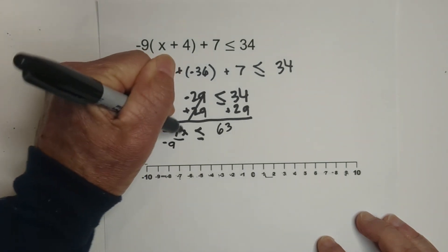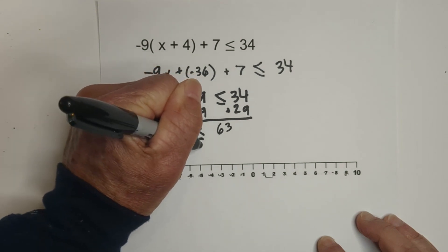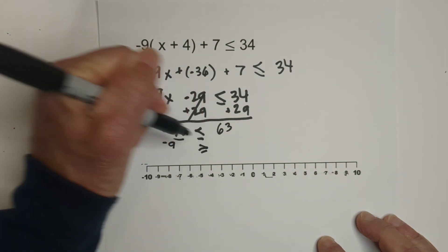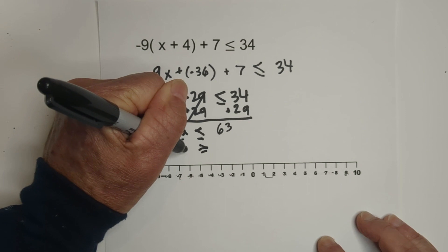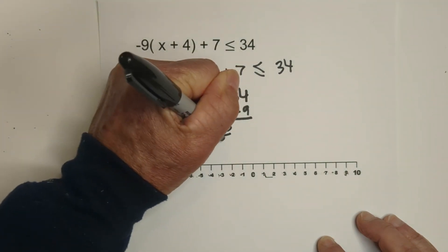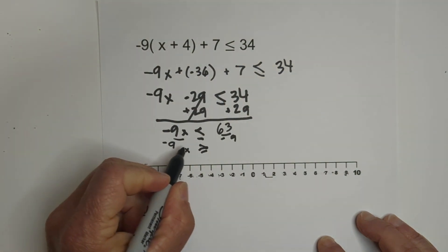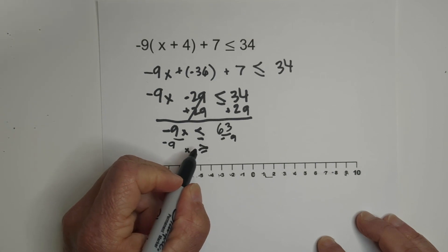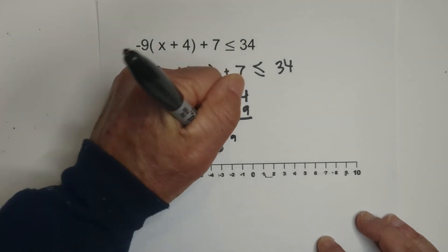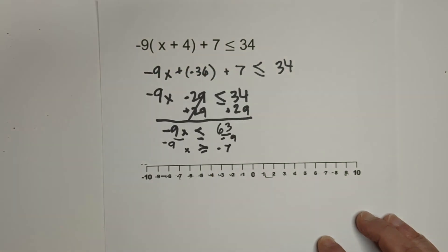We need to flip the sign. So we're going to divide through by negative 9. So we have x is less than or equal to 63 divided by negative 9 becomes negative 7.